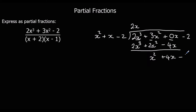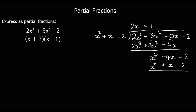We bring down the negative 2 and go again. How many x squareds go into x squared? That's 1. Multiplying through gives x squared plus x minus 2. Taking away: x squared minus x squared is nothing, 4x minus x is 3x, and negative 2 minus negative 2 is nothing. So we've got 3x as the remainder.